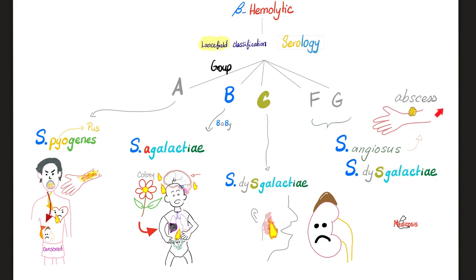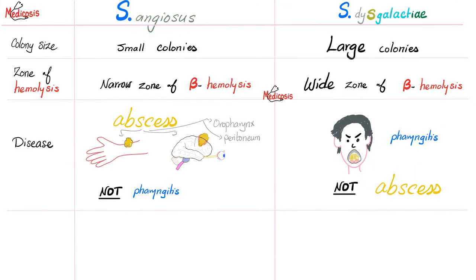How about angiosus? Abscess. Streptococcus angiosus causes abscesses. Let's dig deeper. The angiosus can cause an abscess anywhere — it could be in the oropharynx, in the peritoneal cavity, in the brain, or in the skin. Usually Streptococcus angiosus does not cause pharyngitis. Conversely, Streptococcus dysgalactiae can cause pharyngitis but usually does not cause an abscess.